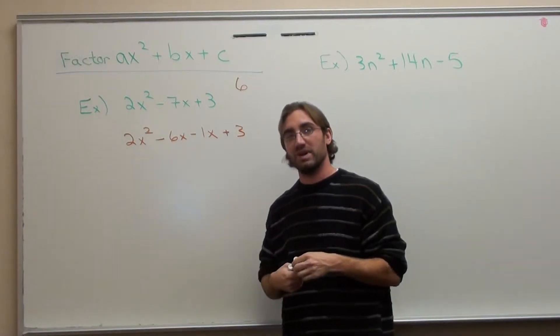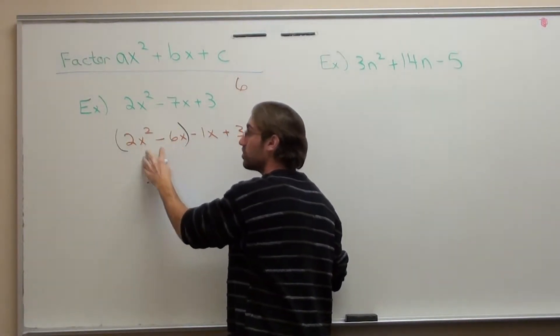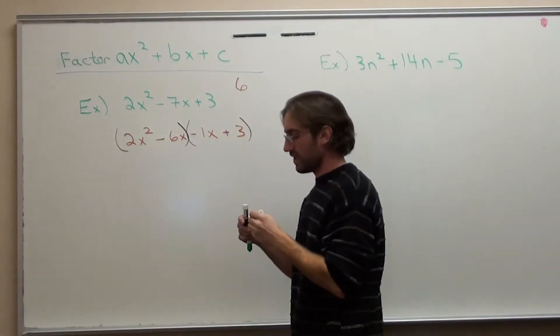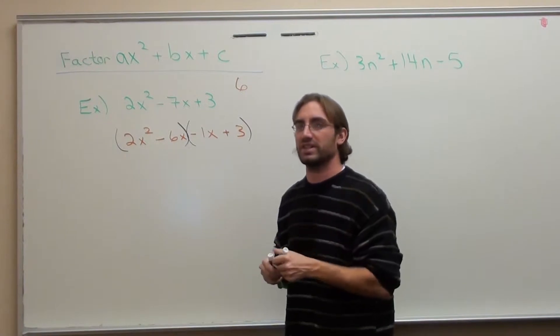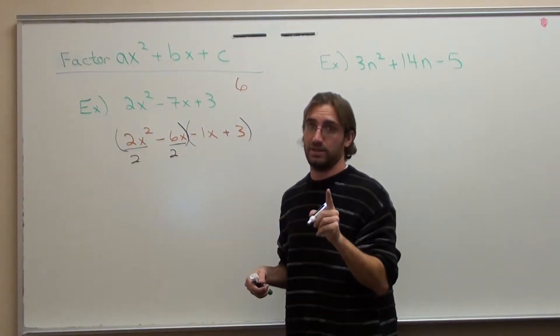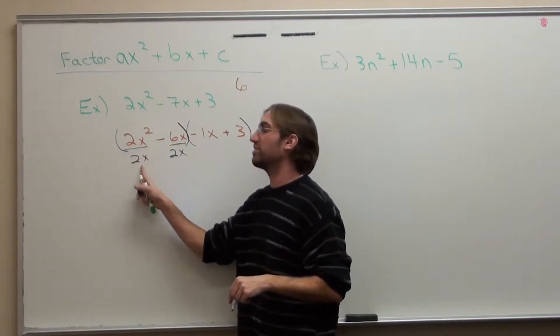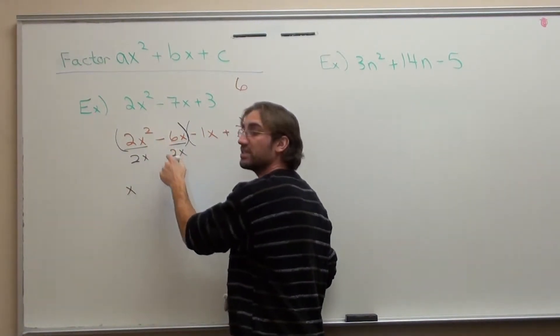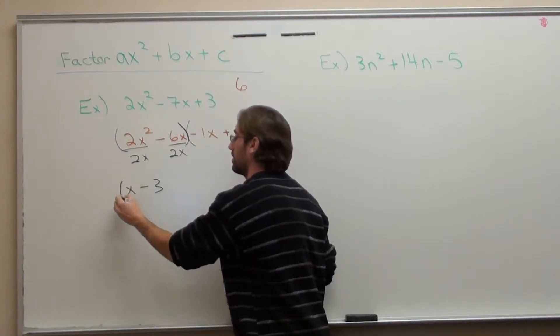I'm manipulating the expression but I didn't change anything. And then I've got plus 3 left over. Now what I'm going to do is factor this by something called grouping. I'm going to factor these two together, this group together, and this group together right here. What is the GCF of 2x² and 6x? I can take out a 2 and an x. When I take out 2x, here's what I have left: 2x² divided by 2x is x. -6x divided by 2x is -3.